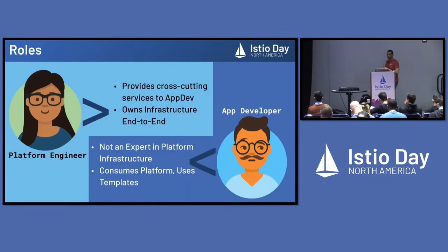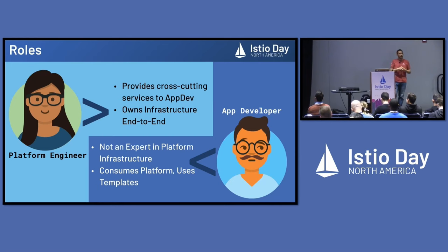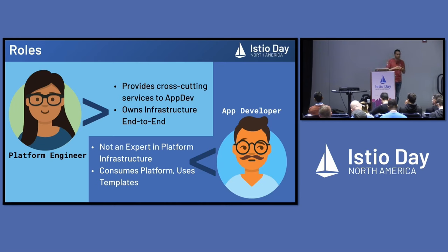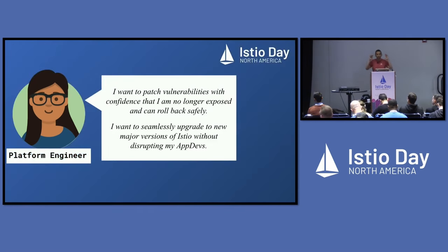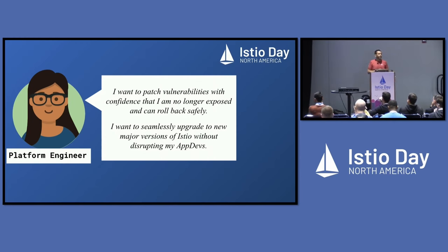Some of the roles we're going to talk about: the platform engineer provides the actual infrastructure and system, and their customer is the application developer — the internal engineer. App developers don't necessarily want to be geniuses in platform infrastructure; they just want to write their code, consume templates, and basically utilize the platform. The platform engineer really just cares about patching vulnerabilities, keeping the system up and running, keeping the lights on, and upgrading without disturbing any of the engineers. That's their primary goal.